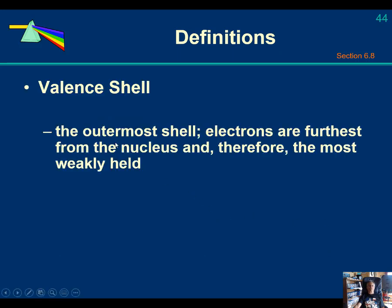Definitions. The valence shell is the outermost shell. Electrons furthest away from the nucleus, therefore the most weakly held.